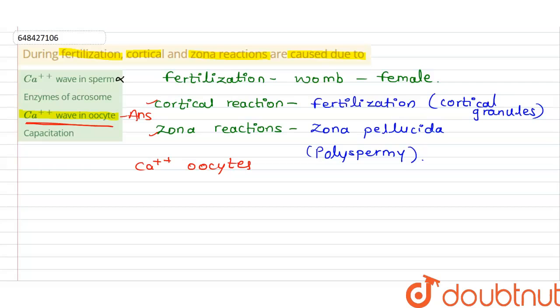Enzyme of acrosome has different functions, other functions, and not even the capacitation. There will be only the correct answer of this question will be perfectly that is calcium plus plus wave in the oocytes. Thank you.